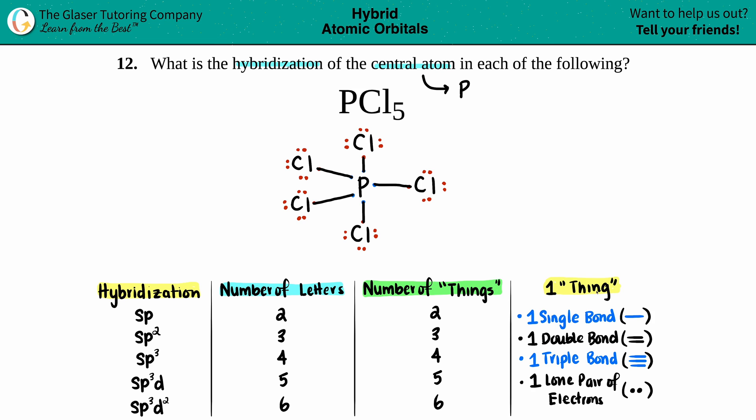Now the letters correspond to how many things are around that atom that you're talking about, in this case phosphorus. But what classifies as one thing? Well, one single bond is one thing, one whole double bond is one thing, one whole triple bond is one thing, and a lone pair of electrons.